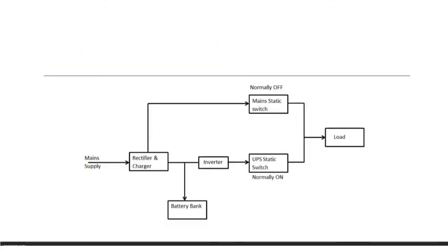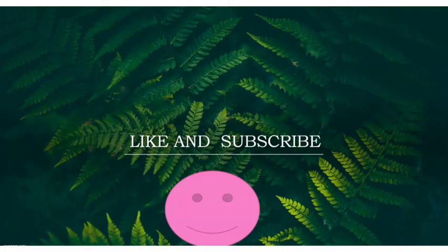With the help of the switch, the connection shifts between the main supply and the UPS — that is called a line-interactive UPS. Online and offline UPS also have switches, which will be discussed in their separate videos. So these are the three classifications of static UPS: online, offline, and line-interactive. If you found this video useful, please subscribe to the channel, like the video, and share it with your friends.